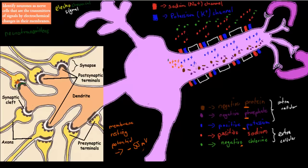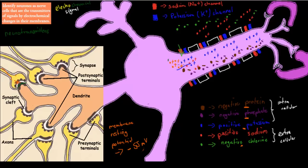Once the potential drops to minus 55 millivolts, the sodium gates open. The sodium particles — positive particles — can now come in. When many positive particles are close together, they repel each other. They won't go back in the direction they came from because there's too much positive charge there. So they spread out in the opposite direction, moving forward along the axon, pushed by electrostatic repulsion.